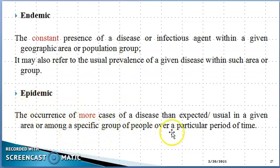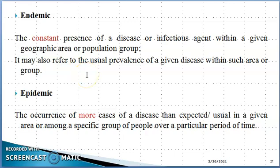When the usually expected frequency of dengue exceeds the number from last year, or exceeds the expected number, that is epidemic. So to summarize: endemic is when the disease is constantly present at a constant number — constant and endemic. Epidemic is when the expected frequency is exceeded — that is epidemic.